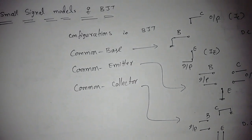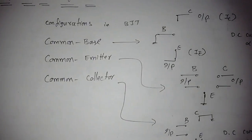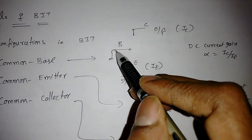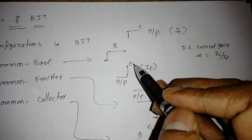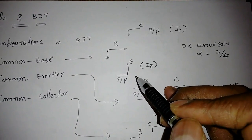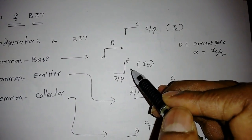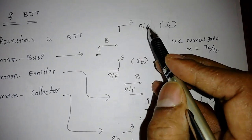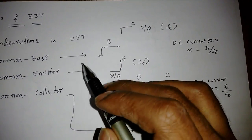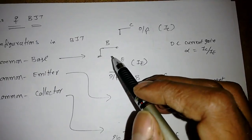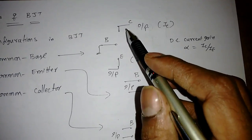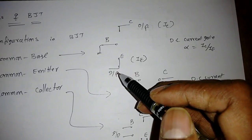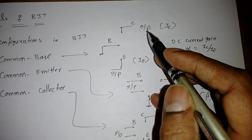In common base configuration, the base is common to both collector and emitter. That means we will apply input at the emitter and take output at the collector. That is why it is called common base — the base is common to both collector and emitter, input is at emitter, and output is taken at the collector.